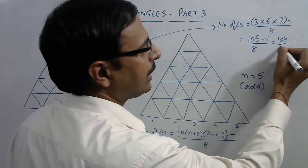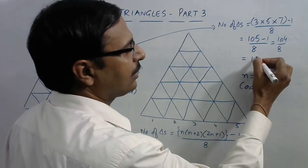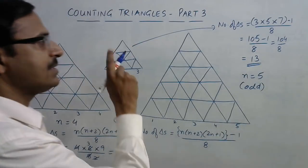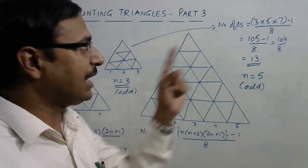By eight, which is one zero four upon eight. Now if you divide one zero four by eight, you are going to get one and three, so thirteen triangles are there in this figure. You don't need to count the number of triangles, just apply the formula and get to the answer easily.